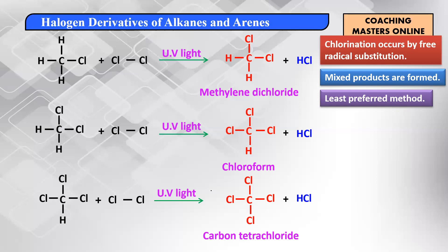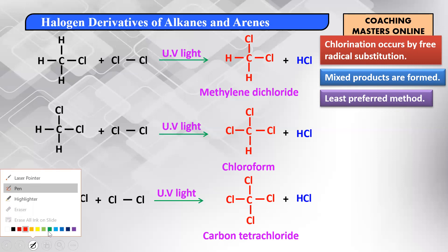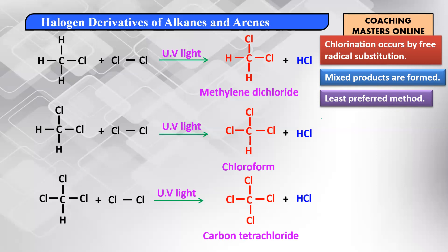One more thing to remember: whenever all the hydrogens in a molecule are substituted by halogen, this type of halogenation is referred to as exhaustive halogenation. It is called exhaustive because we have exhausted all the hydrogen atoms — the reaction continues until all hydrogens are used up.